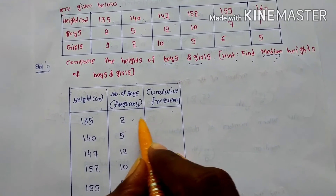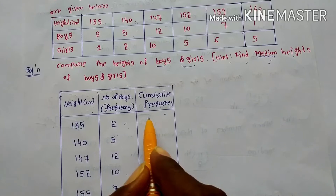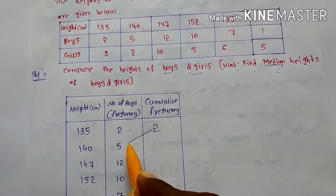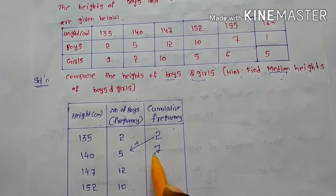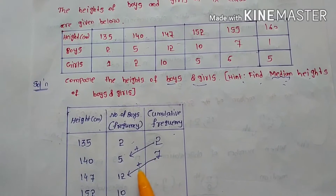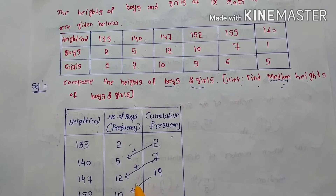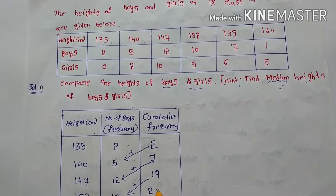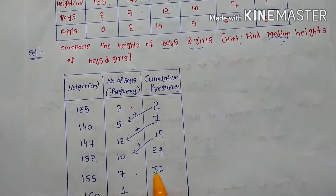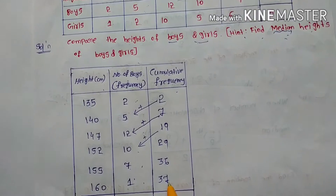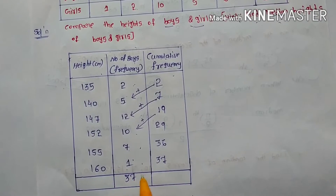The cumulative frequency starts at 2 for 135 cm. Then 2 plus 5 gives 7. Next, 7 plus 12 gives 19. Then 19 plus 10 gives 29. Next, 29 plus 7 gives 36. Finally, 36 plus 1 gives 37. So the total frequency n is 37.